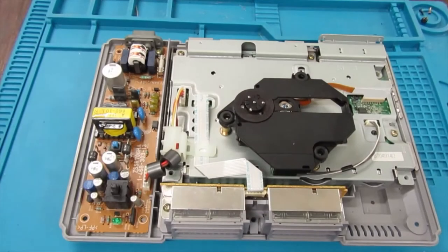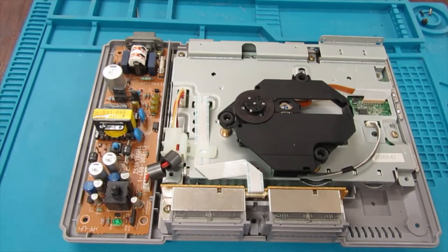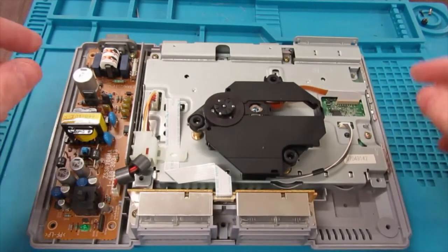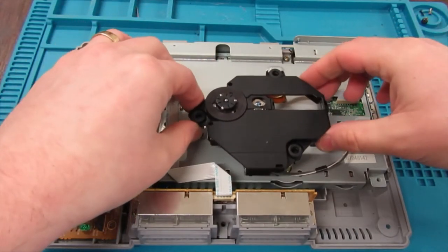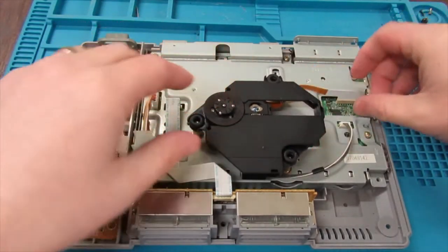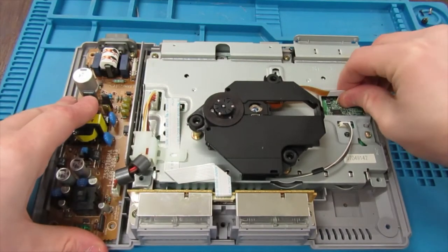The lid just lifts straight off. On a PlayStation 1, this laser isn't actually held down with anything, it's just sitting on its little rubber feet. So just disconnect that ribbon, just pull straight out, and this cable.